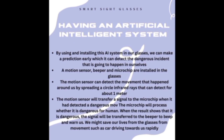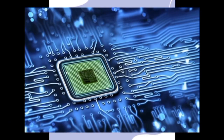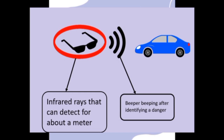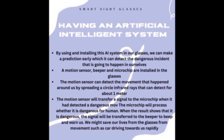First is having an artificial intelligence system. By installing this AI system in our glasses, we can make early predictions which can detect dangerous incidents. A motion sensor, beeper, and microchip are installed in our glasses. The motion sensor detects movement around us by spreading infrared rays that can detect for about a meter. It transfers a signal to the microchip when it detects a dangerous movement, such as a car diving towards us rapidly. The microchip processes whether it is dangerous, and when it is, the signal is transferred to the beeper to warn us. We might save our life with the glasses.